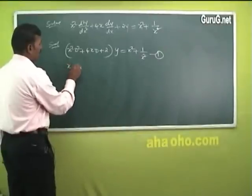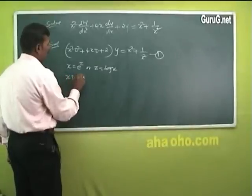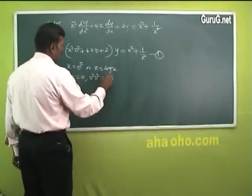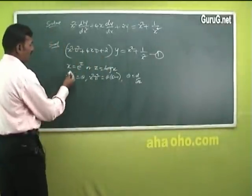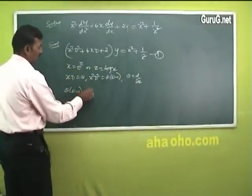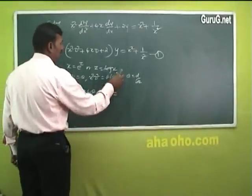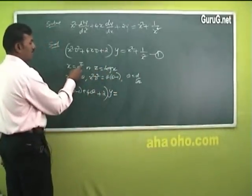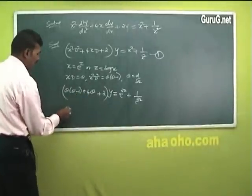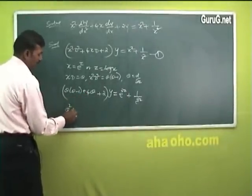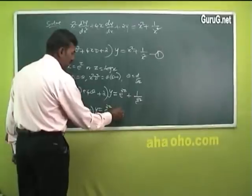Using the transformation x = eᶻ or z = log x, so xD = θ and x²D² = θ(θ - 1), where θ = d/dz. Substituting into equation 1: θ(θ - 1) + 4θ + 2 into y = x² = e²ᶻ, and 1/x² = e⁻²ᶻ. Simplifying: (θ² - θ + 4θ + 2)y = e²ᶻ + e⁻²ᶻ, giving (θ² + 3θ + 2)y = e²ᶻ + e⁻²ᶻ.